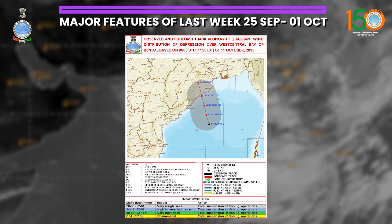After that it moved nearly westward and weakened into a well-marked low pressure area over west Vidarbha and adjoining north Madhya Maharashtra. It traversed central India, passing through the Gulf of Cambay neighborhood, over the Gulf and Kutch neighborhood on 30th September, and over northeast Arabian Sea and adjoining Saurashtra coast on 1st October as a well-marked low pressure area.